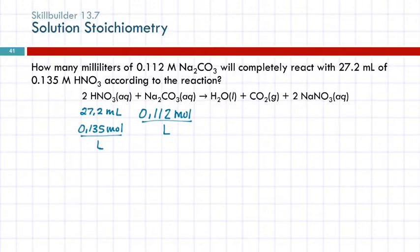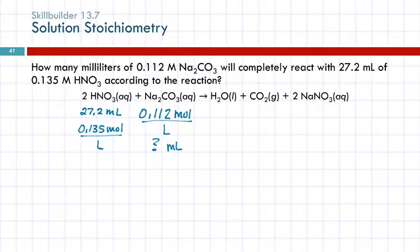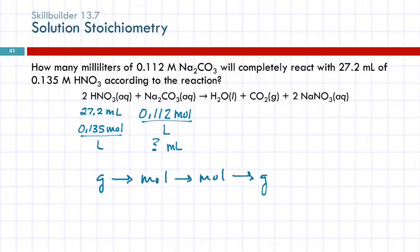What are they asking us to find? Milliliters of sodium carbonate. We've got information about one compound and we're looking for information about another compound — do not use M₁V₁ = M₂V₂. This is stoichiometry. Normally we go grams to moles to moles to grams, but here we have a volume and we're asked to find a volume, so we're starting with milliliters and ending with milliliters.